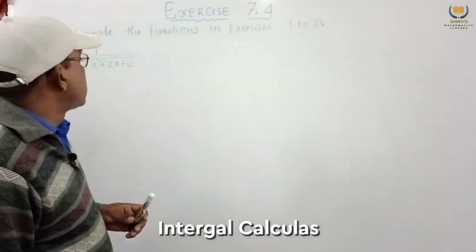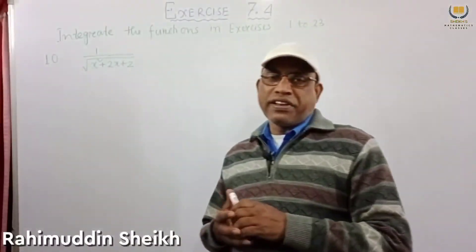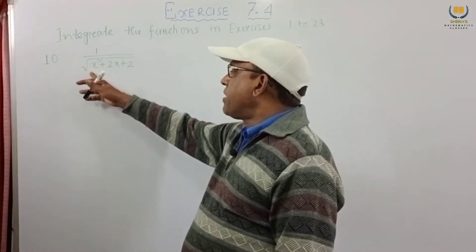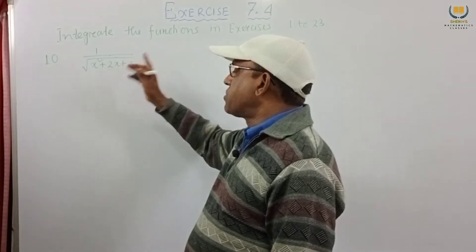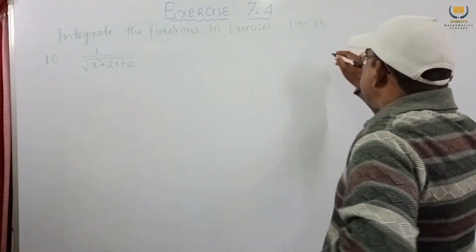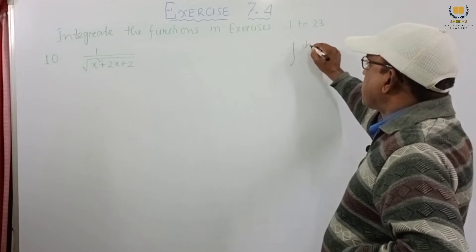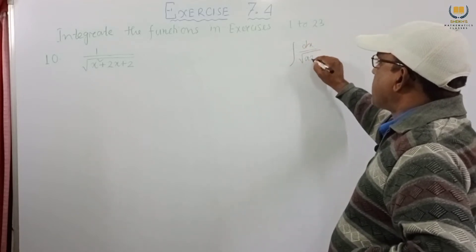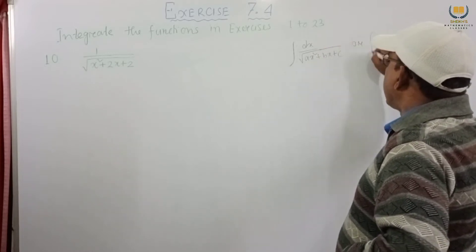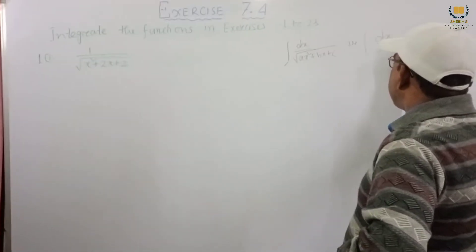So there students, today we start problem number 10, NCERT book, class 12, integral calculus, method of substitution. Problem number 10: 1 by root over x square plus 2x plus 2. Now we know the form of integrals. If the integrals are either this form — integration dx by root over ax square plus bx plus c — or integration dx by ax square plus bx plus c.